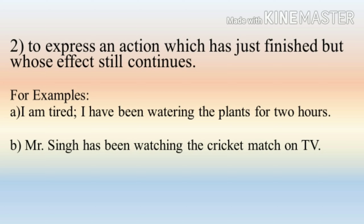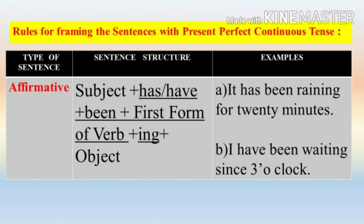So, to express these kinds of actions, we use present perfect continuous tense. Now let us see what is the rule for writing affirmative sentences in present perfect continuous tense. The rule is: subject plus has or have plus been plus first form of the verb plus -ing plus object. Aap ise aise bhi samajh sakte hain: present show karne ke liye hum yahan has ya have use kar rahe hain, perfect show karne ke liye been, aur continuous show karne ke liye first form of the verb plus -ing.